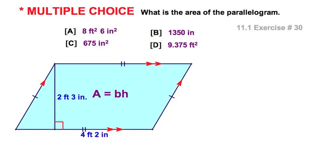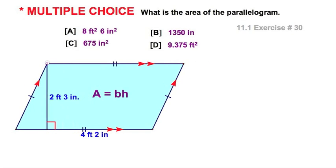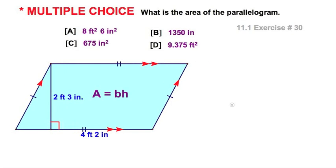Here's an interesting problem in our textbook - Exercise #30, a multiple choice question finding the area of this parallelogram with a given base and height. This problem makes you proud to be an American because we've got the most bizarre measuring system on the planet. We have 4 feet 2 inches and 2 feet 3 inches. Base times height, and we have four choices above. Let's work through it more than one way.